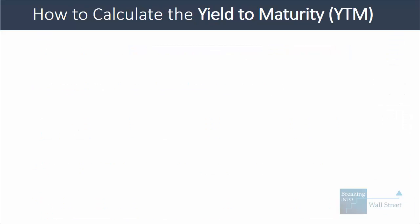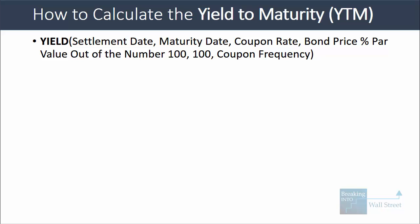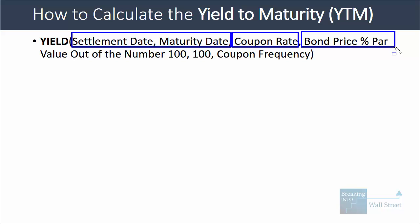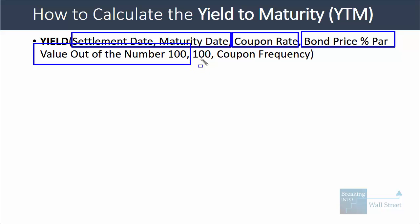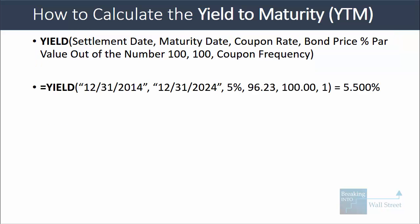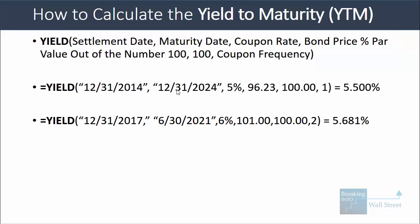To calculate the yield to maturity, you can use a built-in Excel function — the YIELD function. You enter the settlement date, the maturity date, the coupon rate (5% here), the bond price as a percent of par out of 100, then 100 because the company repays at par value, and then the coupon frequency. For example, buying on December 31st, 2014, holding to 2024, with a 5% coupon and the bond trading at 96% of par, the YIELD function gives us a yield to maturity of 5.5%.